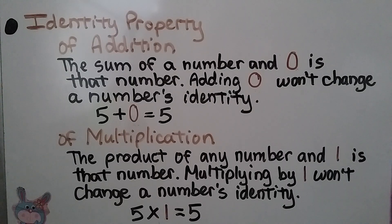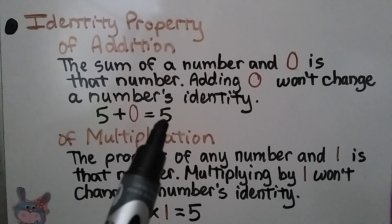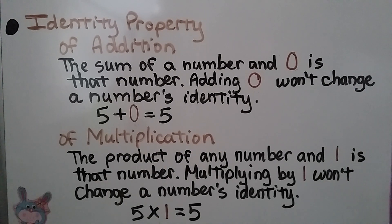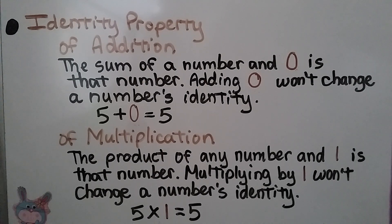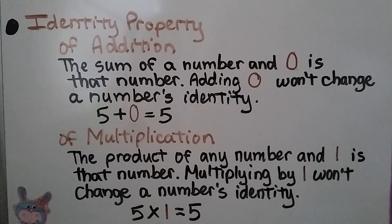The identity property helps a number keep its identity. The identity property of addition says the sum of a number and 0 is that number — so adding 0 won't change the number's identity. 5 plus 0 stays a 5. The identity property of multiplication says the product of any number and 1 is that number. Multiplying by 1 won't change a number's identity — 5 times 1 stays a 5. Notice the addition one uses 0 and the multiplication one uses 1.